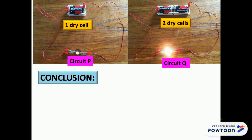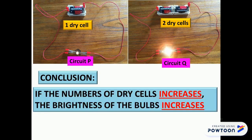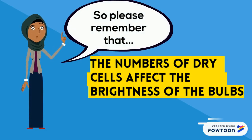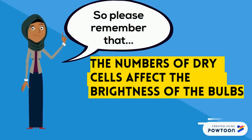So the conclusion is, if the number of dry cells increases, the brightness of the bulbs increases. Please remember that the number of dry cells affects the brightness of the bulbs.